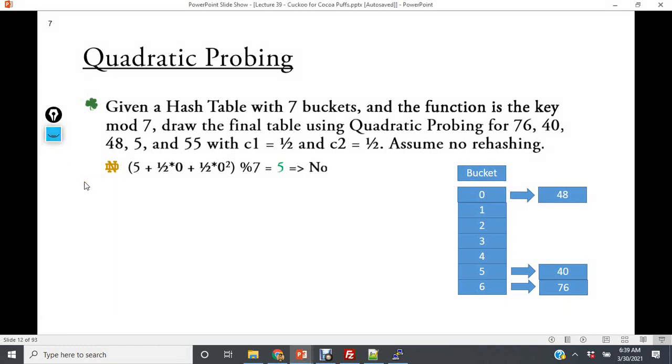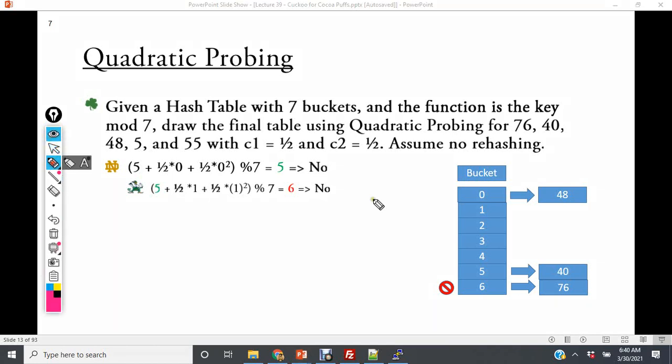So now we're going to go to 5. 5 hashes to 5. We're not there. Then we put in 1 in the new iteration. That goes to 6. And that's no. Now in a linear probe, we would try going back to 0 and it wouldn't work.